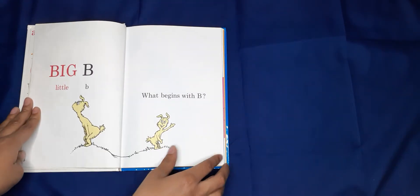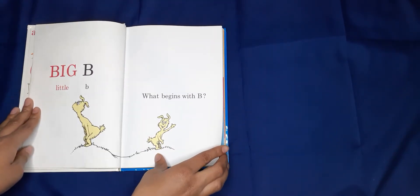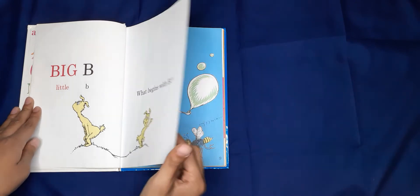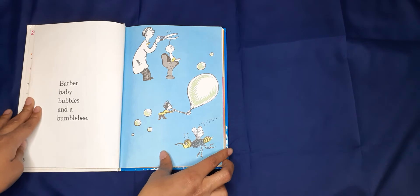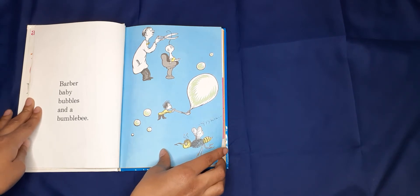Big B, Little B. What begins with B? Barber, Baby, Bubbles, and a Bumblebee.